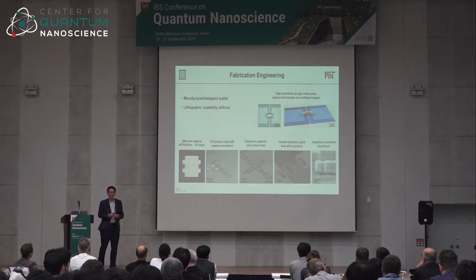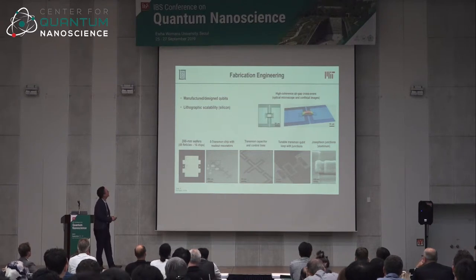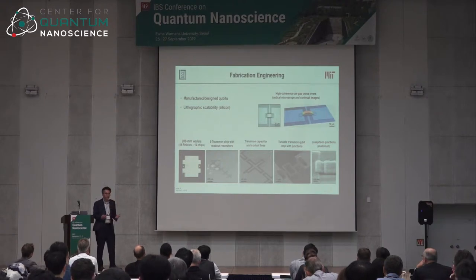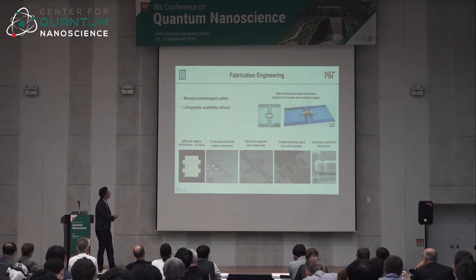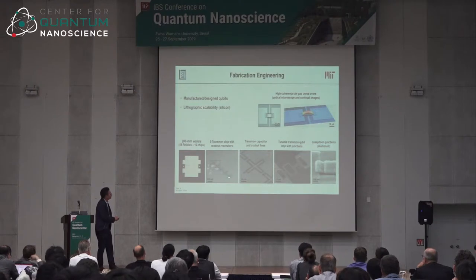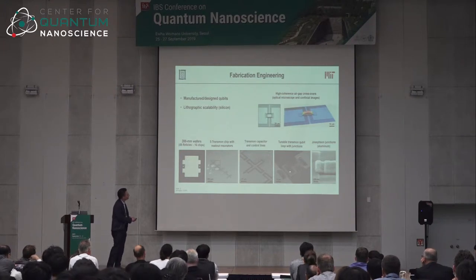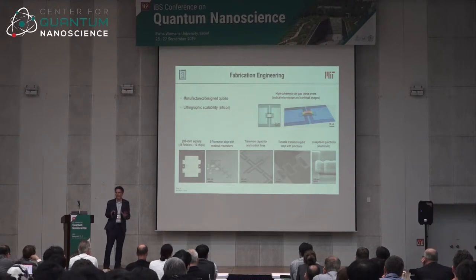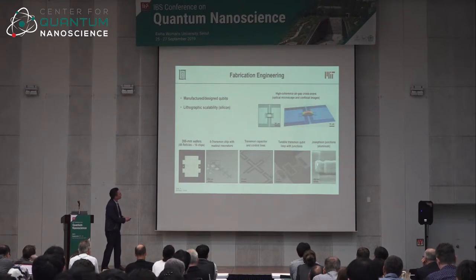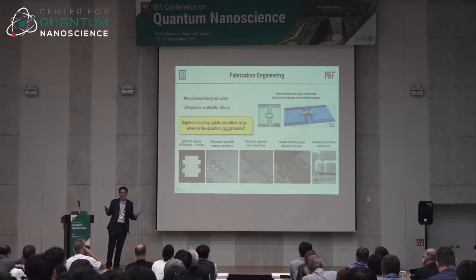We fabricate these using silicon processing tools — the same tools used on CMOS lines — producing lithographically scalable devices. On an 8-inch wafer with many devices, zooming into one reveals five transmons in a row at roughly 200-micron scale. Zooming further shows a capacitor at ~50 microns, then the flux loop at ~5–10 microns, then the Josephson junction at ~100 nanometers. So one might reasonably ask: where is the quantum nanoscience in these seemingly large devices?